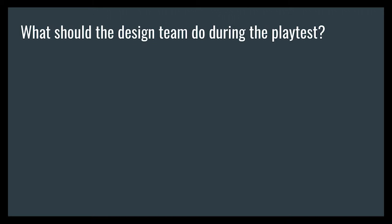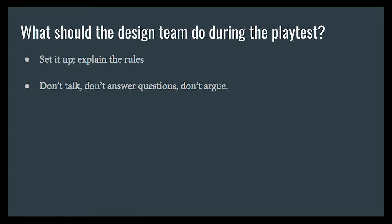What should the design team do during the playtest? First, set up that you want to get feedback at the end — make sure playtesters know why they're there. Second, you can explain the rules, but explain them as people start playing, not all at once so that they forget. But once the game gets going, the designers need to not talk. Don't answer questions. Don't argue with the playtesters. If they play a rule in a way you didn't intend, let them. Your job is to see what happens when they play. Just listen and learn. You should take notes — you need at least one person on your team whose only job is to observe the playtest and write down what they see.